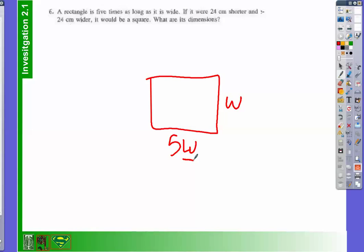So that means that if it was 24 centimeters shorter, so that means if this was shorter and this was longer, it would be a square. What are the dimensions? That's an interesting question.